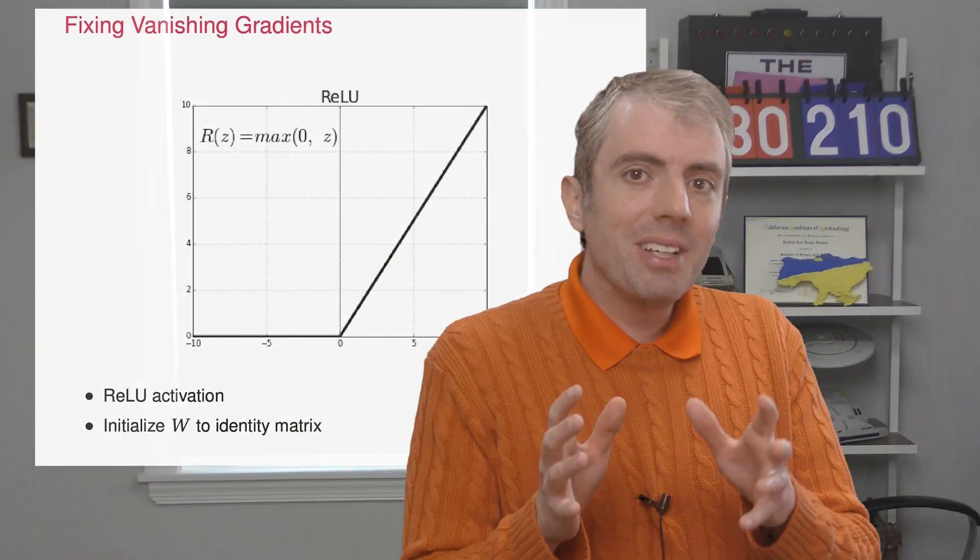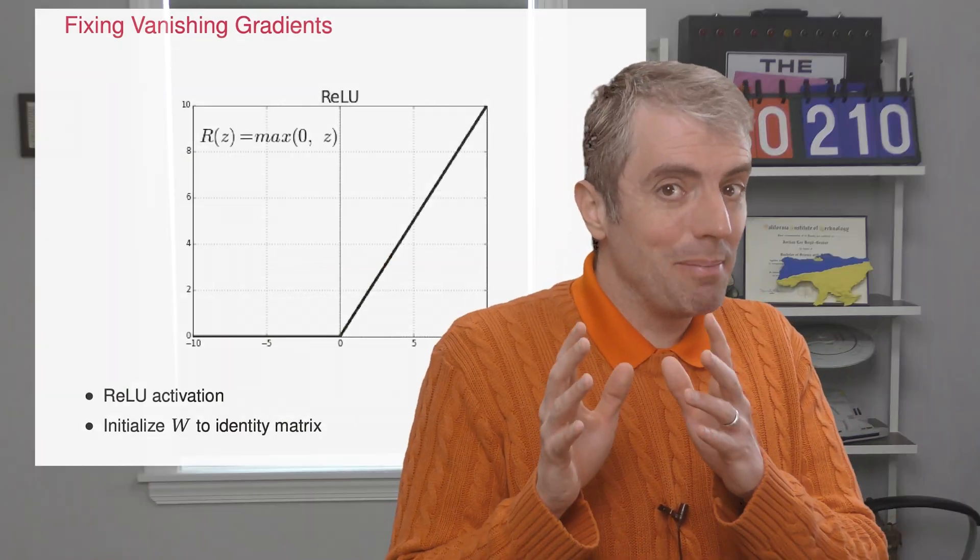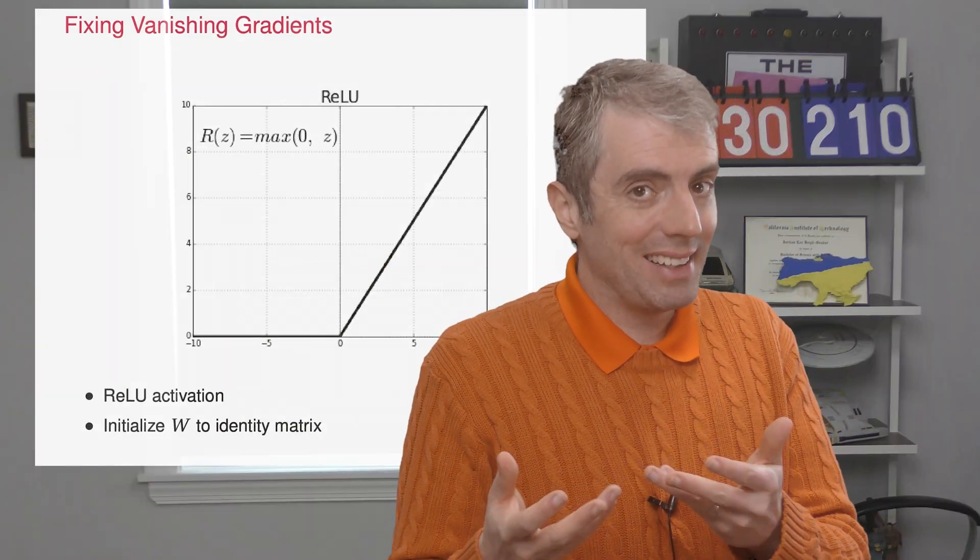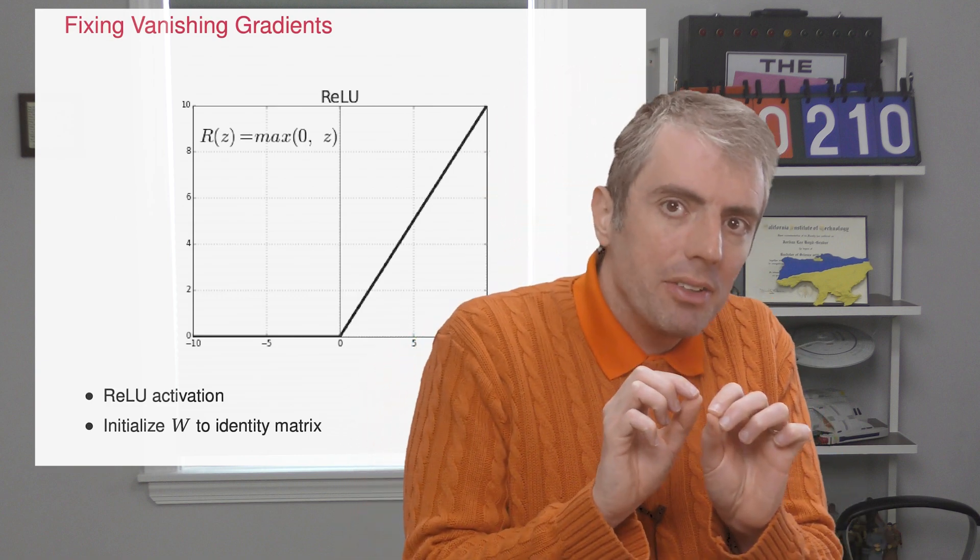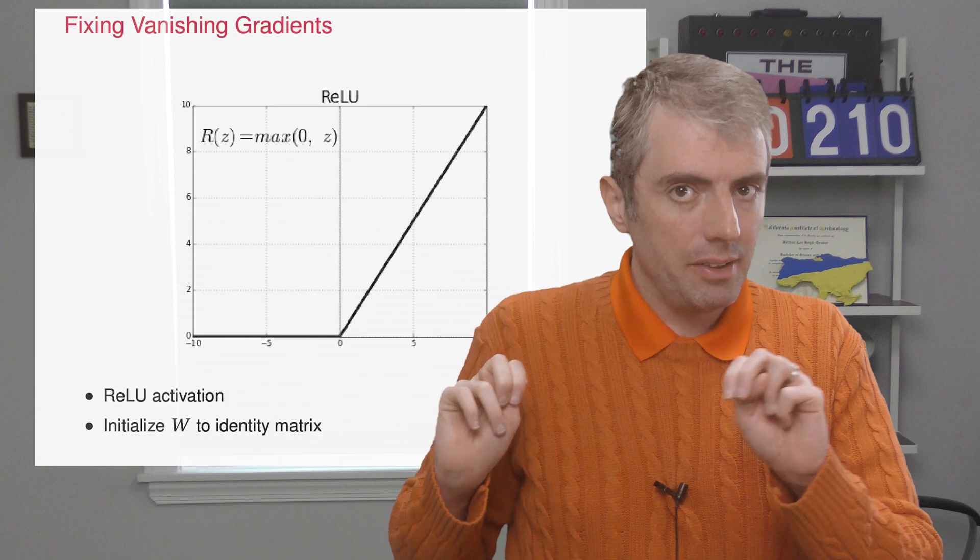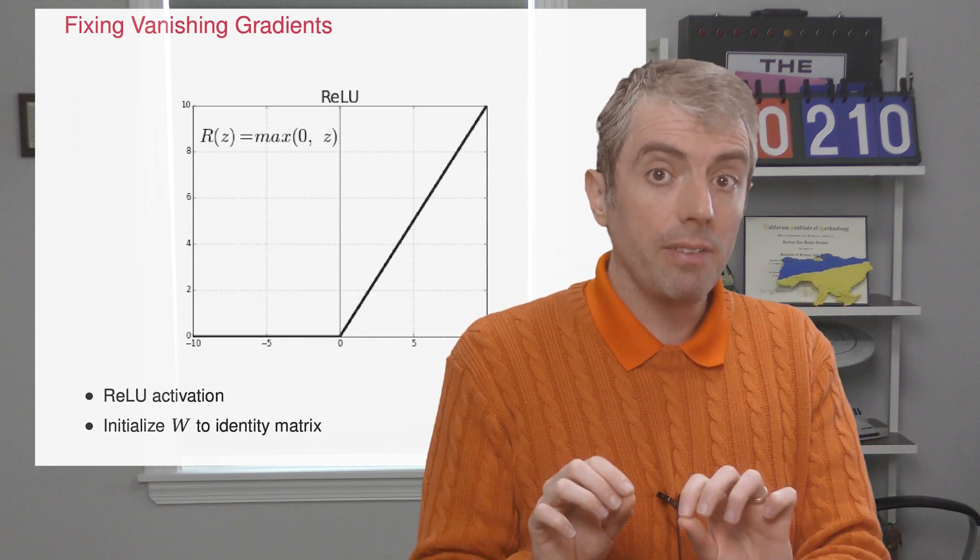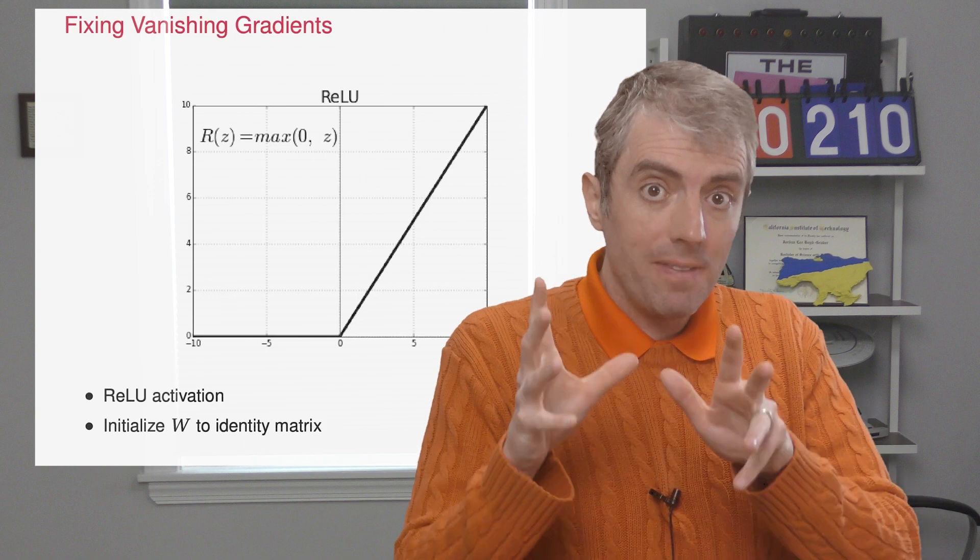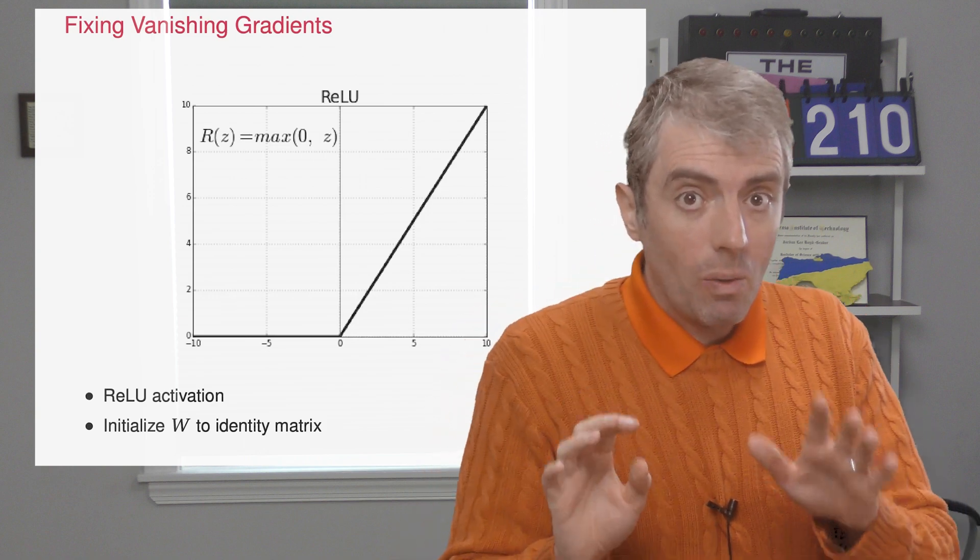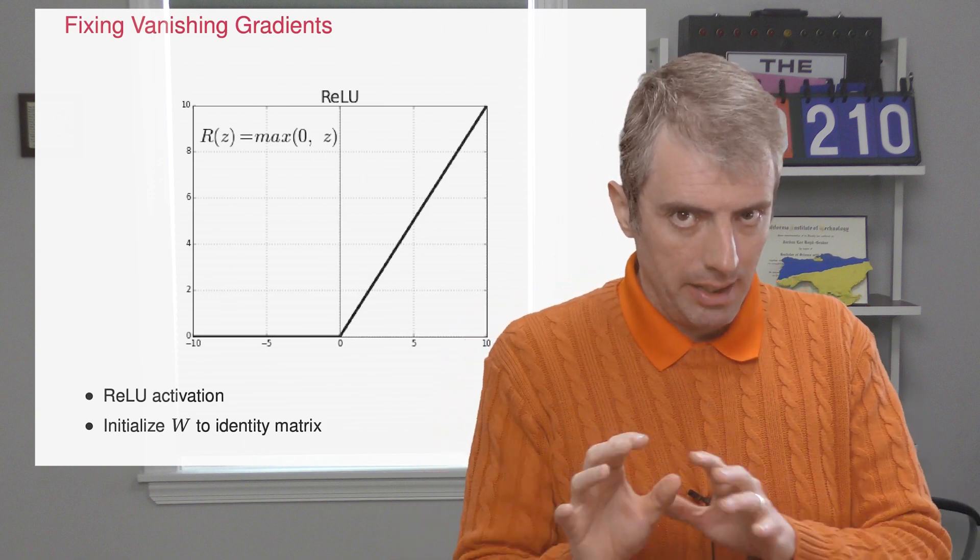Now what about the vanishing gradient problem? I've been using ReLU not just because it makes math easier for our examples, but because it's asymmetric. It zeroes out small values but does nothing to normal values. If you use this very simple activation function and initialize your w's to the identity matrix, both of these things together go a long way to helping prevent small gradients.